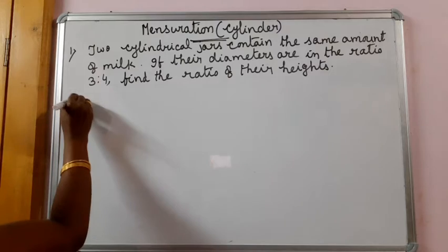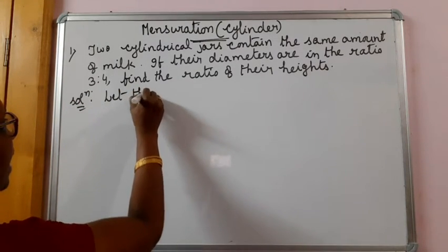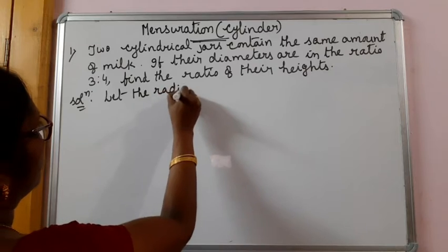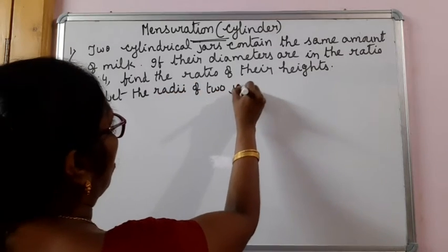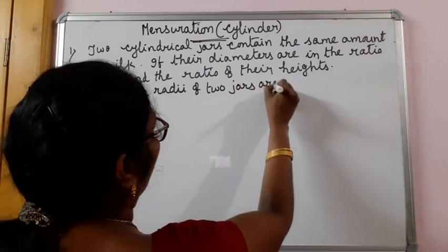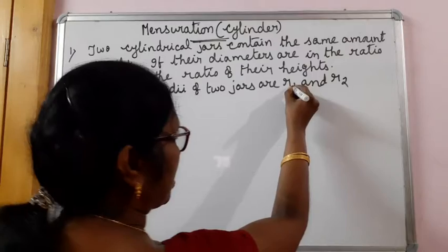Let us take, let the radii of two jars are R1 and R2.